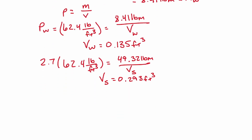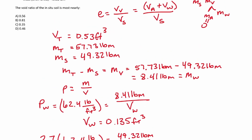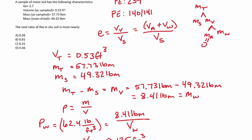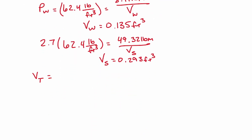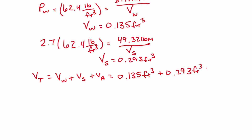We have the volume of water and the volume of solids. What else do we need? The volume of the air. The total volume equals the volume of water plus the volume of solids plus the volume of air. So: 0.135 cubic feet plus 0.293 cubic feet plus the volume of air equals 0.53 cubic feet total. Solving for the volume of air gives us 0.102 cubic feet.